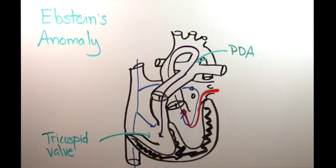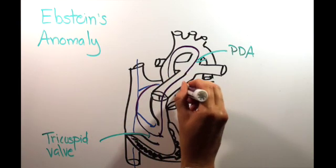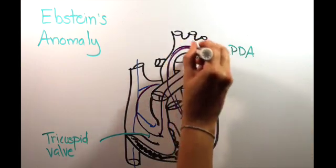Because of the tricuspid regurgitation, the blood backflows into the right atrium to start the circle again. A two-ventricle circular shunt.